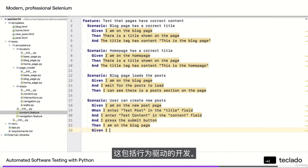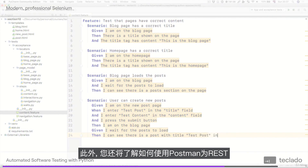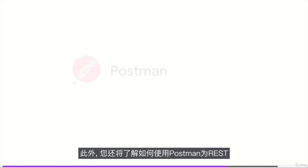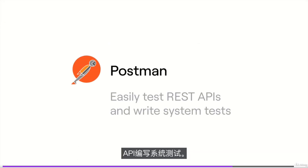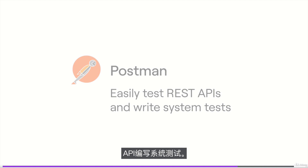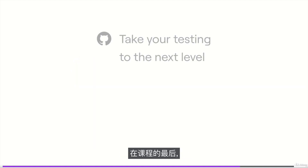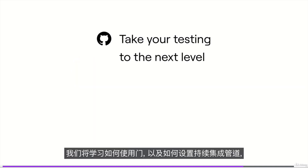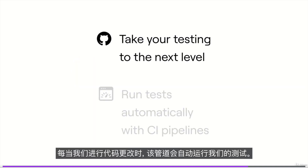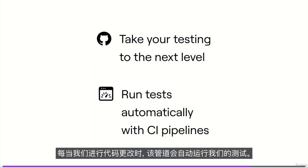That includes behavior-driven development. In addition, you will learn about using Postman to write system tests for a REST API. At the end of the course, we will learn about working with Git, as well as how to set up continuous integration pipelines that run our tests automatically whenever we make code changes.